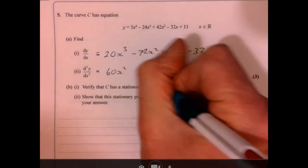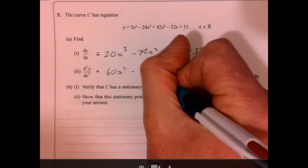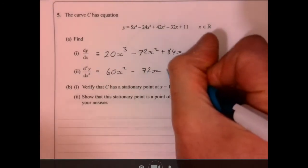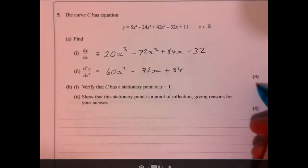So what have we got? 60x² take away 72x and plus 84, right. There you go, nice easy 3 marks, right.